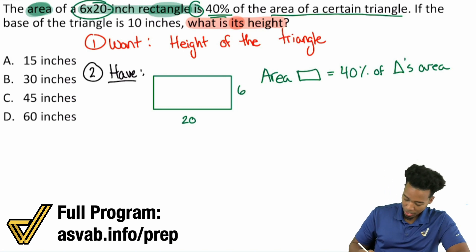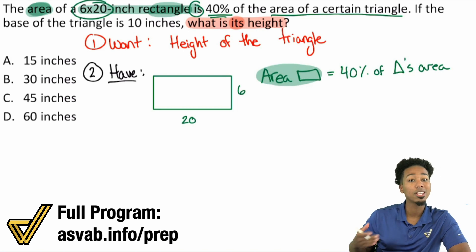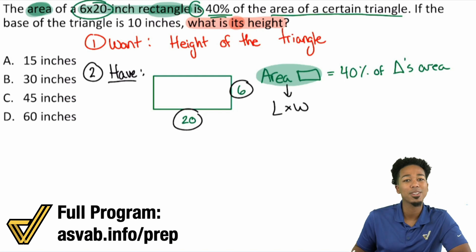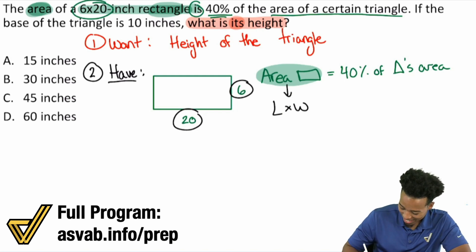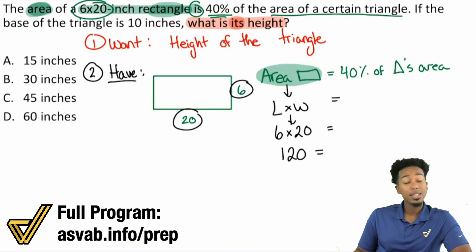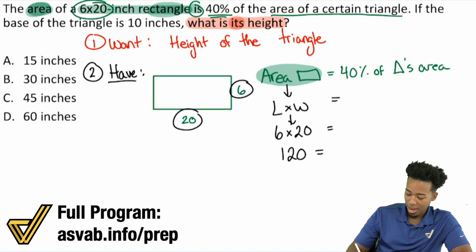The area of the rectangle, that's going to be the length times the width. We have the length and width right here, it's a 6 by 20 rectangle. So that's 6 times 20, and that's going to be 120.